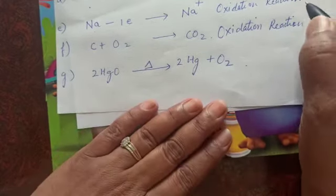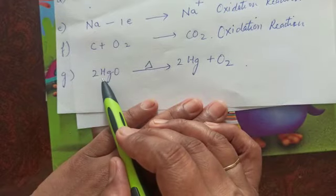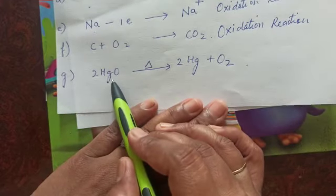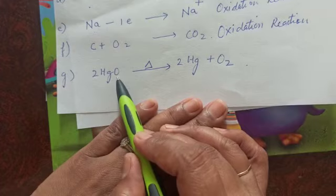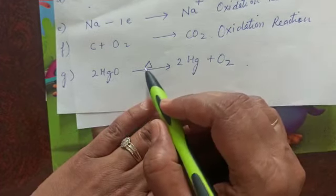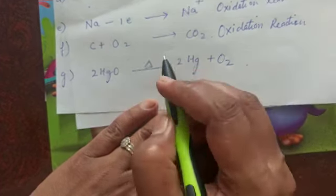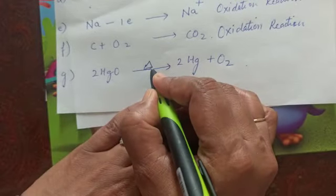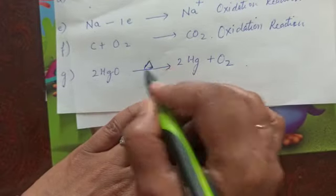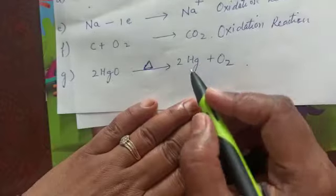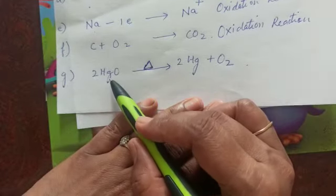Then next is HgO. This metallic oxide, mercuric oxide is getting heated and on heating, thermal heating. This delta means thermal heating or you can say thermal decomposition. So here thermal decomposition is taking place and this compound is getting broken into metal and oxygen.